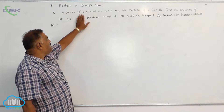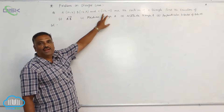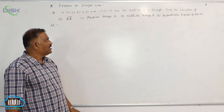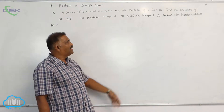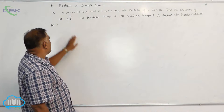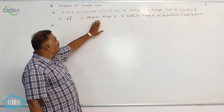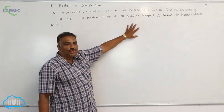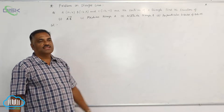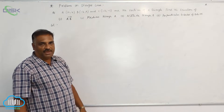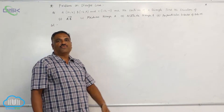A(10, 4), B(-4, 9), C(-2, -1) are three points — the vertices of a triangle. We need to find the equation of AB, the median through A, the altitude through B, and the perpendicular bisector of side AB. This problem has four parts, and we will do them one by one.